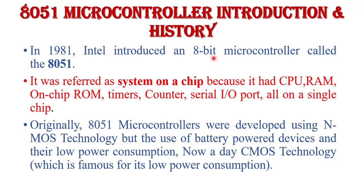Word length means that the microcontroller processes 8-bit data at a time — it can fetch and operate on 8-bit data at a time. It was referred to as a system on chip or computer on chip because it has CPU, RAM, ROM, timer, counter, serial input/output ports — all functional blocks on a single chip, making it a complete system.